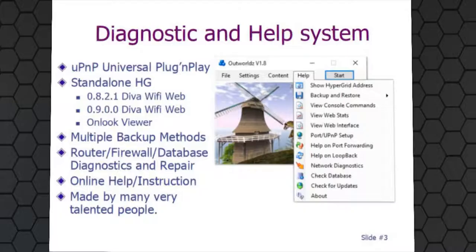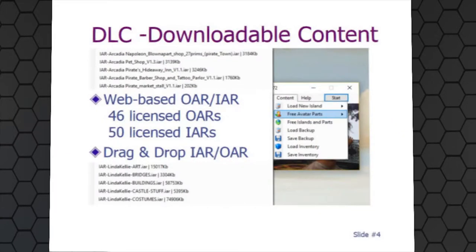The next version is 2.0. The Hypergrid version is 1.80821 and 0900 switchable in DreamWorld; DreamGrid is core 0900. The system also has a couple of other nice features — you can do web-based OARs as well as drag and drop them onto the screen. Currently there are 81 OARs and 66 IARs that are known open source with open source licenses, with about 56 available right now in the pull-down menu. You just click Load New Island.